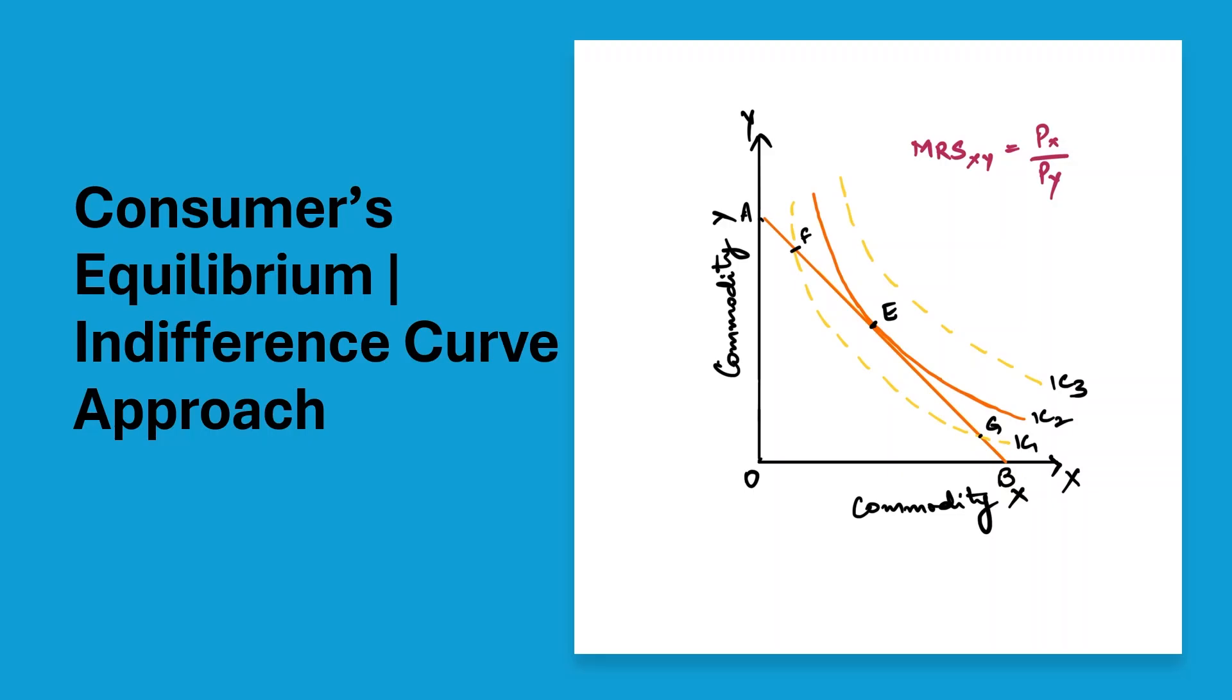So far, we have seen how consumers can choose and we have explored indifference curves and budget lines in detail. In this video, we will uncover how a consumer makes the smartest possible decision using just a graph. This is consumer's equilibrium, the most exam-tested logic-packed concept in the entire unit.